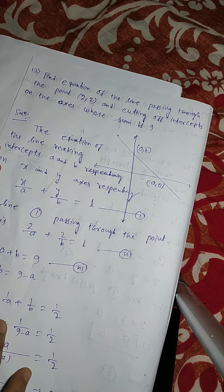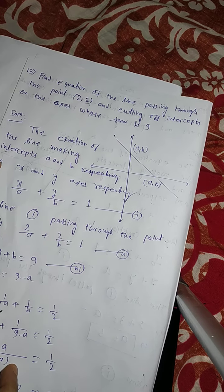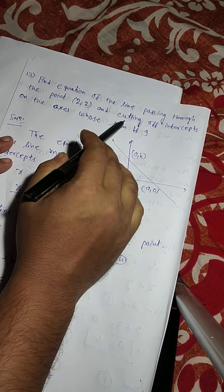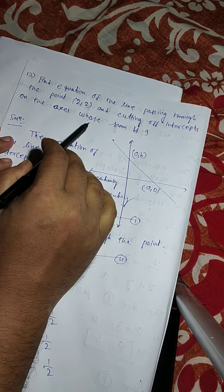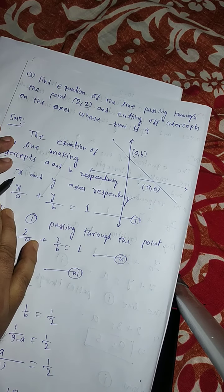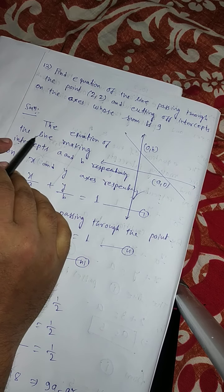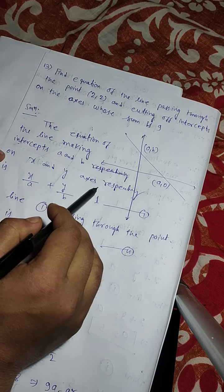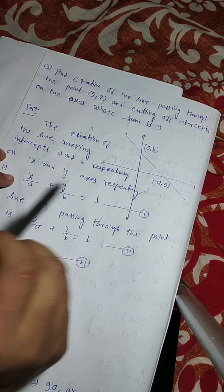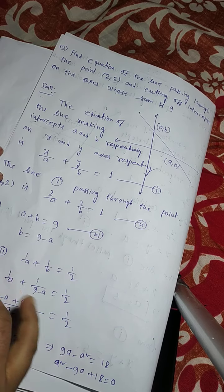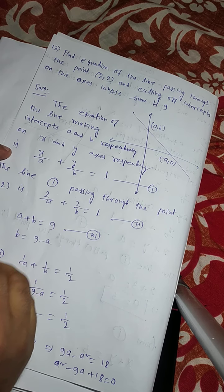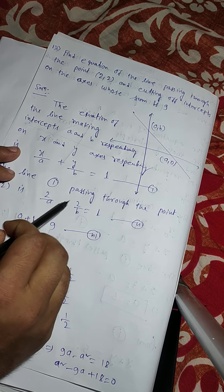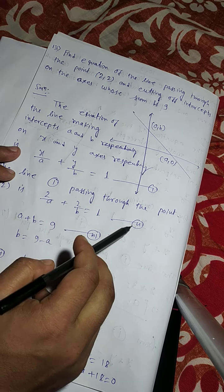Now question number 13: Find the equation of the line passing through the point (2, 2) and cutting intercepts on the axes whose sum is 9. The equation of the line making intercepts A and B on X and Y axes respectively is X by A plus Y by B equals 1, which is equation number 1. The line passes through (2, 2), so 2 by A plus 2 by B equals 1. This is equation number 2.